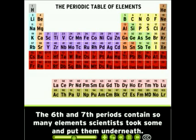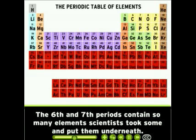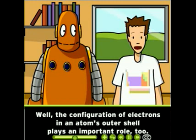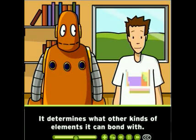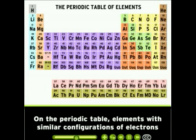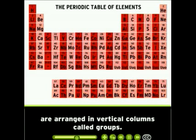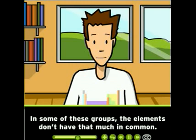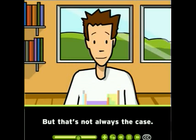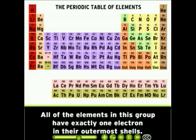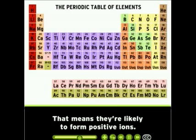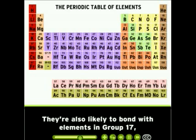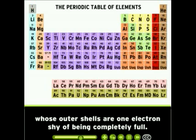The sixth and seventh periods contain so many elements, scientists took some out and put them underneath. The configuration of electrons in an atom's outer shell plays an important role too — it determines what other kinds of elements it can bond with. On the periodic table, elements with similar configurations of electrons are arranged in vertical columns called groups, numbered 1 through 18. Take a look at group 1: all the elements in this group have exactly one electron in their outermost shells, meaning they're likely to form positive ions and bond with elements in group 17, whose outer shells are one electron shy of being completely full.